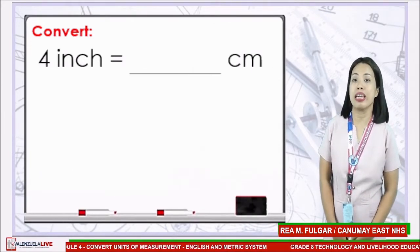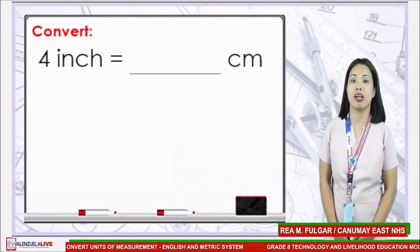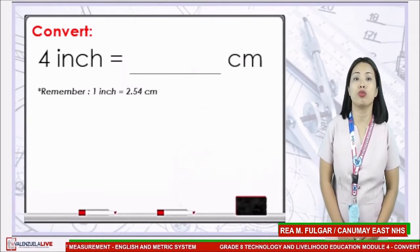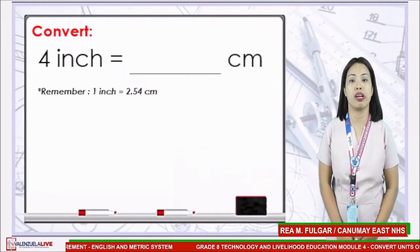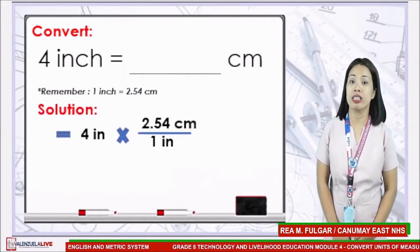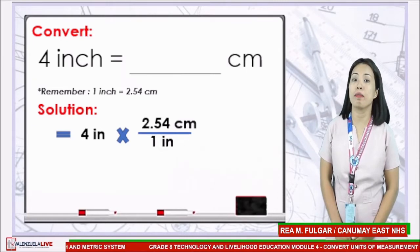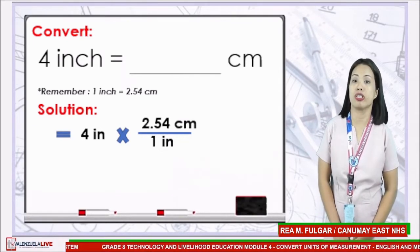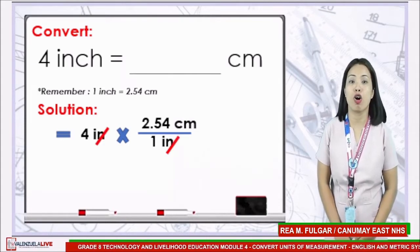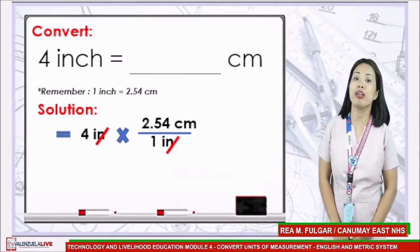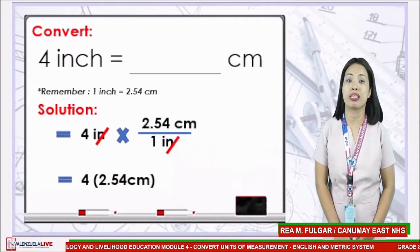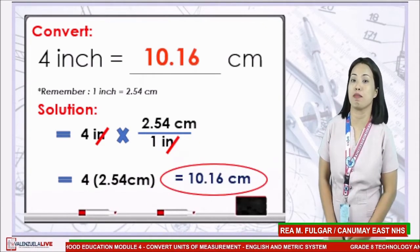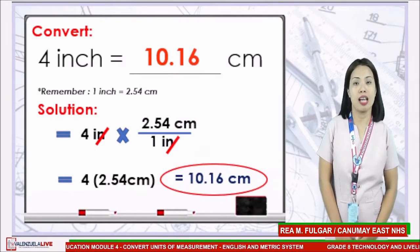Let's proceed to the next example: convert 4 inches to cm. Remember that 1 inch is equivalent to 2.54 cm. The given is 4 inches multiplied by 2.54 cm over 1 inch. Cancel the common unit, which is inch, then multiply 4 by 2.54 cm. The answer is 10.16 cm.